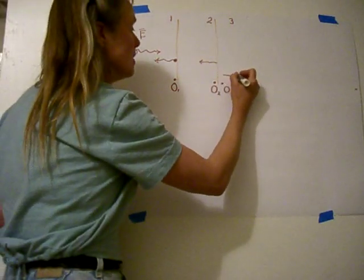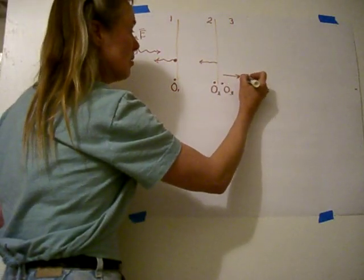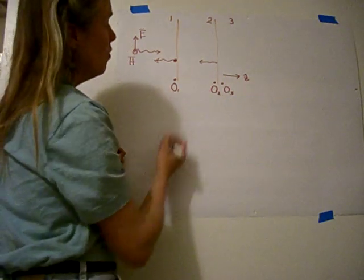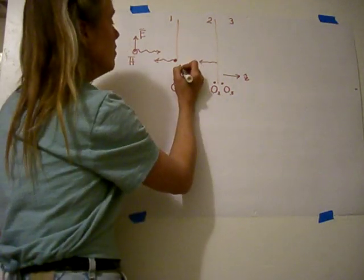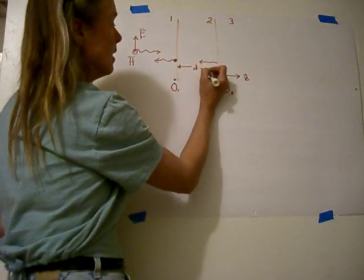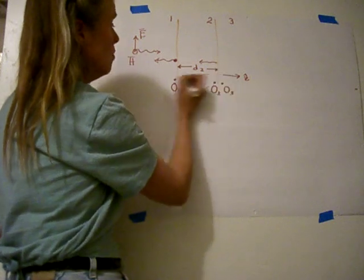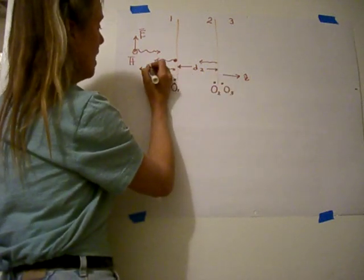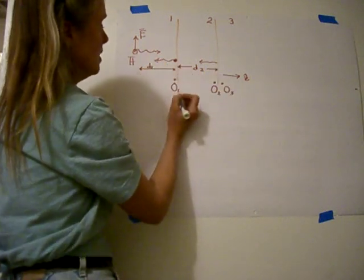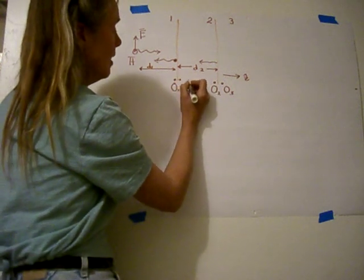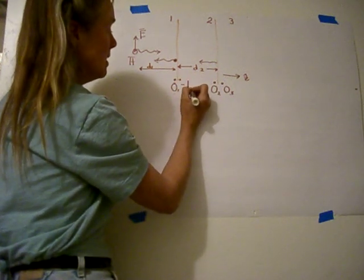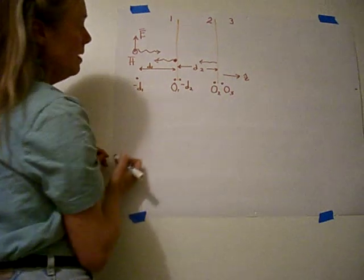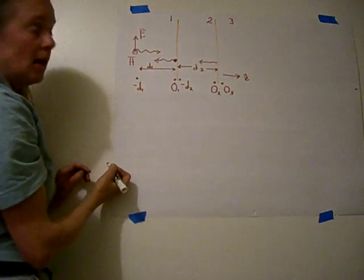The positive z direction is in this direction, just like before. If this region has a thickness d2, and perhaps we're interested in other things that happen out here at d1, then this point right here is minus d2. Anything out here would be minus d1.